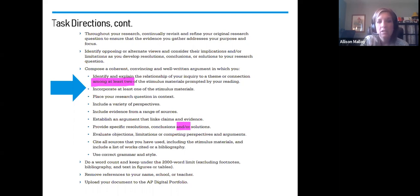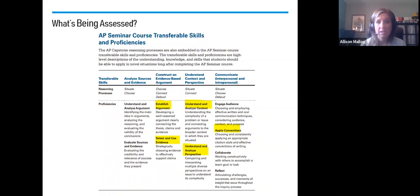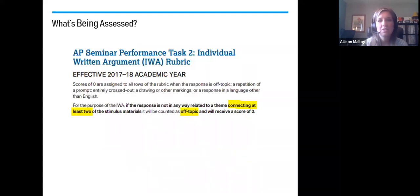Let's continue forward into now what is being assessed. If you look at the proficiencies that are highlighted in yellow down there, we're going to focus on establishing arguments, selecting and using evidence, understanding and analyzing context, understand and analyze perspective, and applying conventions. On the next couple slides, we will talk through what each of these mean in detail. Before we do that, I want to draw your attention to the note that is on the top of the IWA rubric, and it's really, really significant.